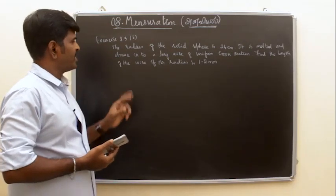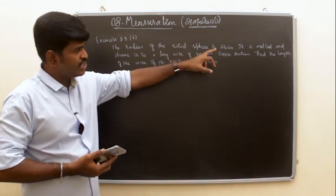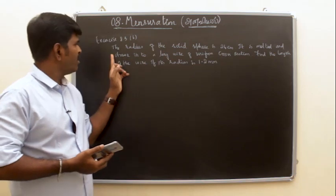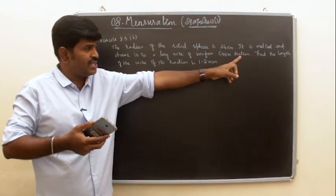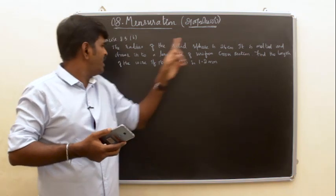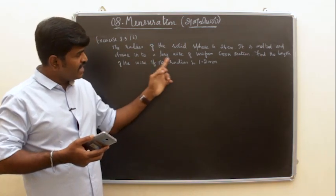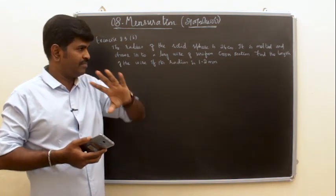Exercise number 8.3. The radius of the solid sphere is 24 cm. It is melted and drawn into a long wire with uniform cross-section. Find the length of the wire if its radius is 1.2 mm.